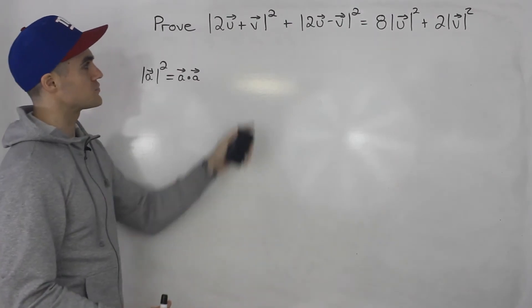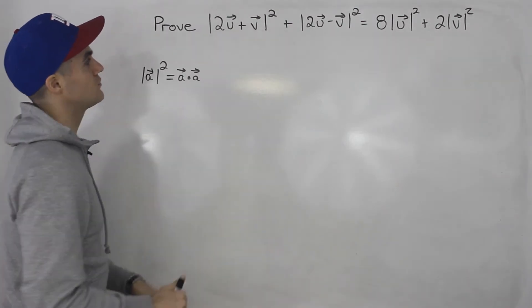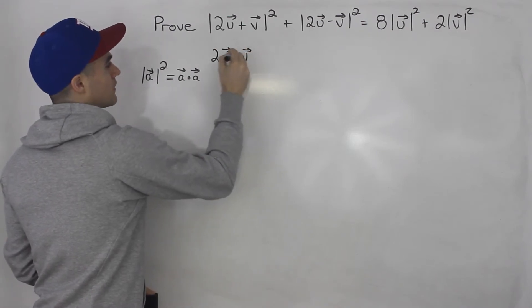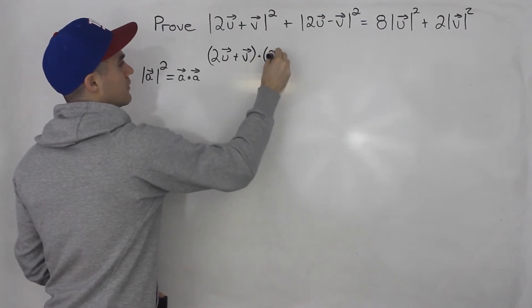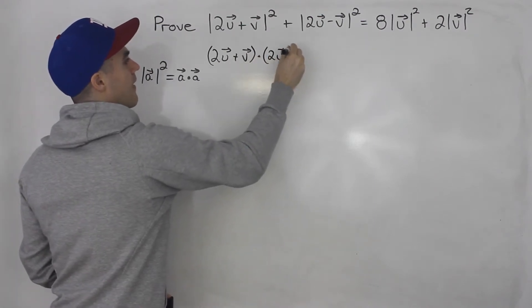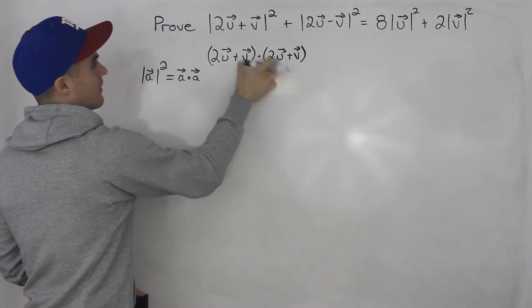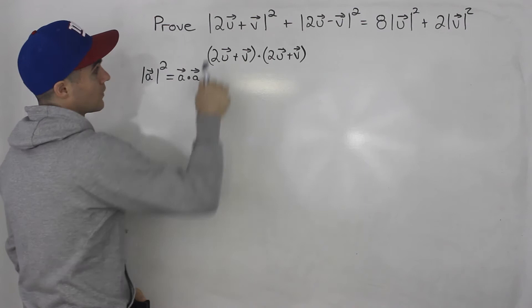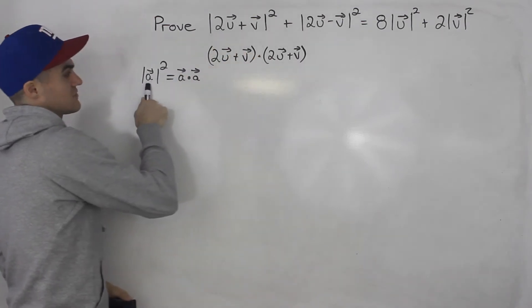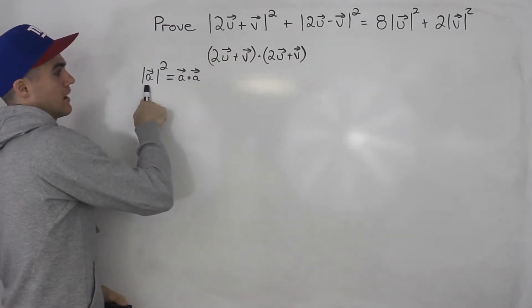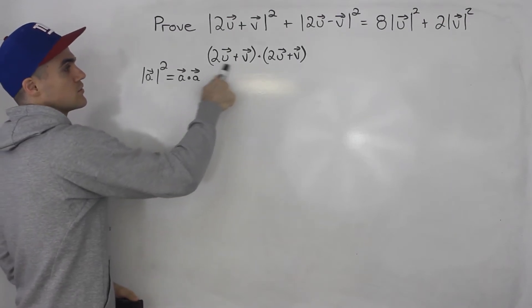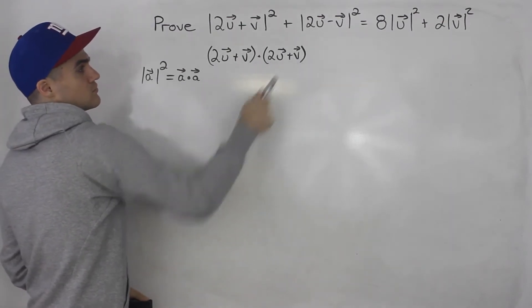Knowing that, what we can do is we could take this vector here, 2u plus v, and we can take the dot product of itself like that, and that there is equal to the magnitude of 2u plus v squared. So this 2u plus v is just this vector a here, and now we just took that vector a dot vector a. So 2u plus v dot 2u plus v.